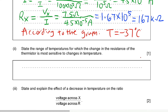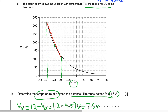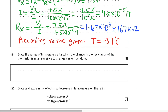State the range of temperature for which the resistance of the thermistor is most sensitive to changes in temperature. For this one you can determine the range by simply looking at the graph. The resistance starts to change steeply when temperature is around negative 50°C and has a very steep gradient until around negative 30°C. So the answer is negative 50°C to negative 30°C.